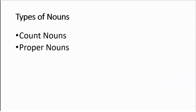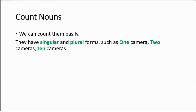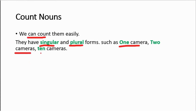There are two types of nouns: count nouns and proper nouns. Let's start with count nouns. These are the types of nouns which we can count easily. They have a singular form and a plural form, such as one camera, two cameras, three cameras.